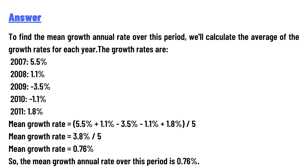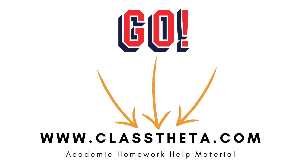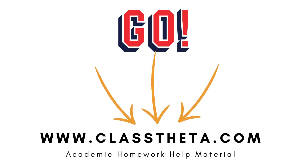That gives us 3.8% over 5, so the mean growth rate is equal to 0.76%. The mean annual growth rate over this period is 0.76%. Thank you for watching the video.